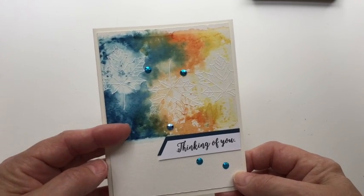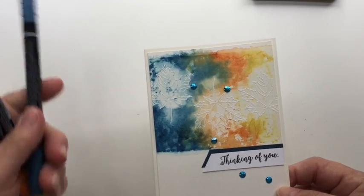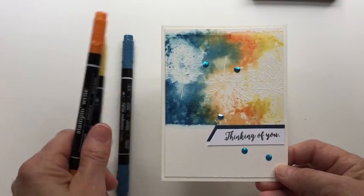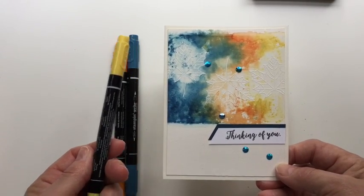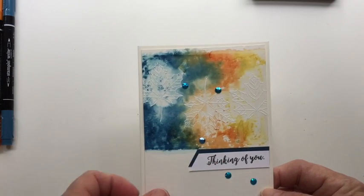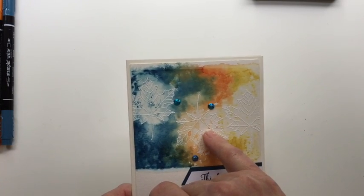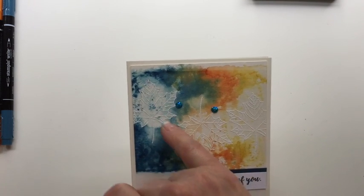It's on watercolor paper and the three colors that I used are Dapper Denim, Pumpkin Pie, and Daffodil Delight. Now, if you'll notice on this card, I got the three leaves from the Colorful Season set. They're the open leaves stamped.